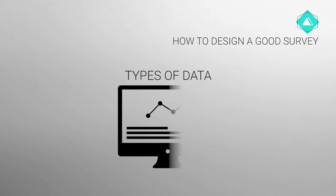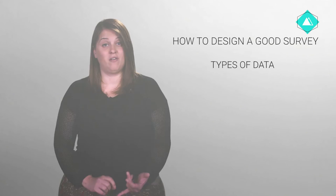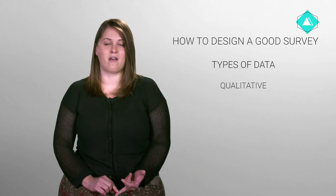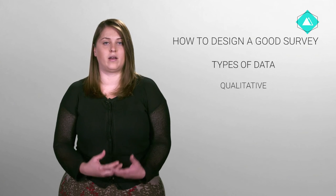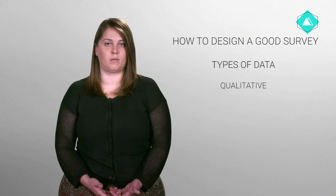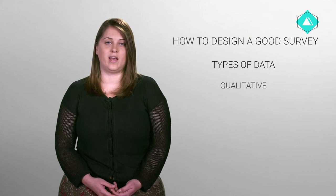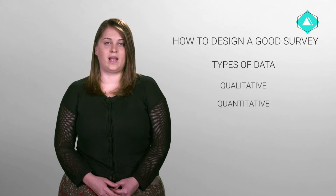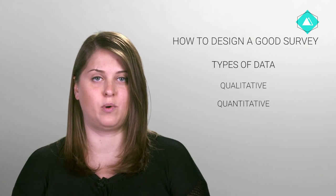Now let's move to the most interesting part. What types of data do we typically collect with surveys? First, qualitative data — this is everything that refers to the quality of something: an opinion, attitude, description, experience, or an interview. And second, quantitative data, which is data that can be quantified in numbers. In a survey, you need both.